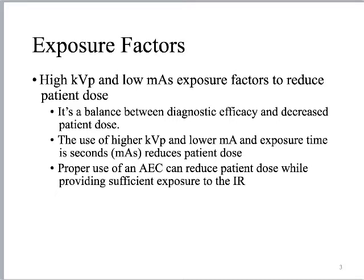Using a higher kVp allows us to further reduce mAs, guided by things like the 15% rule. The problem for us as x-ray technologists is that we're trying to make diagnostic images. If we turn up the kVp and drop the mAs, image contrast decreases — it gets really crummy. As an example, go look at portal imaging in the radiation therapy suite; they're using mega-electron volt energy and the pictures are very difficult to see because they're primarily using Compton scatter for attenuation. We need a balance between diagnostic efficacy and decreased patient dose.